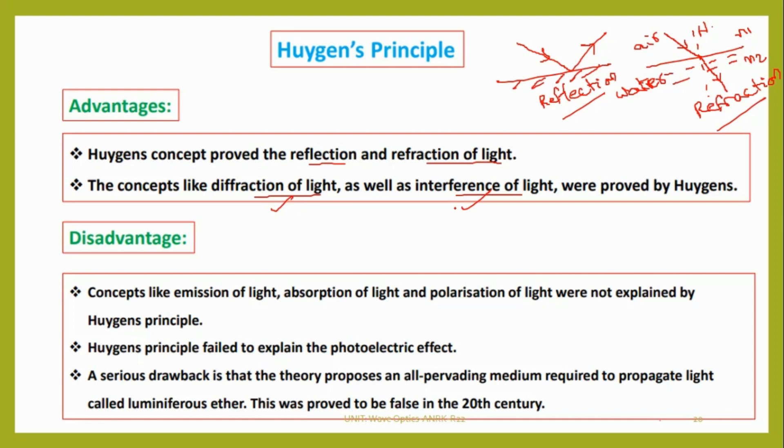It is not able to explain photoelectric effect observed by Hertz long back. What it says is the emission of electrons from a metal surface when light is irradiated. That's what we call photoelectric effect. Albert Einstein, based on quantum theory, was able to explain that and provided the photoelectric equation.